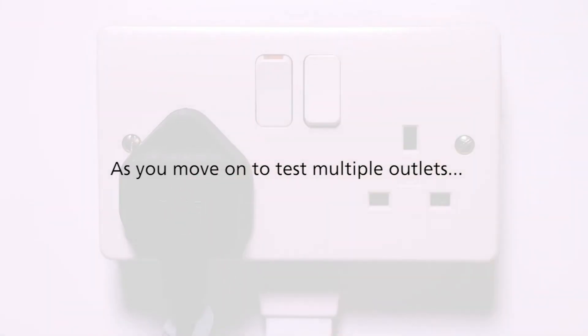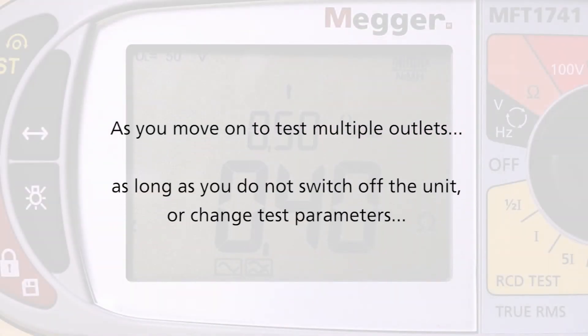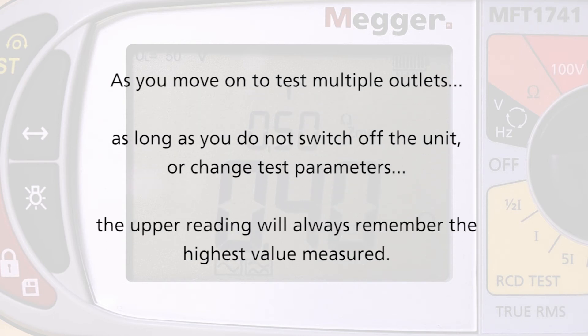As you move on to test multiple outlets, provided the unit is not switched off or a new test parameter selected, the upper reading will always remember the highest value measured.